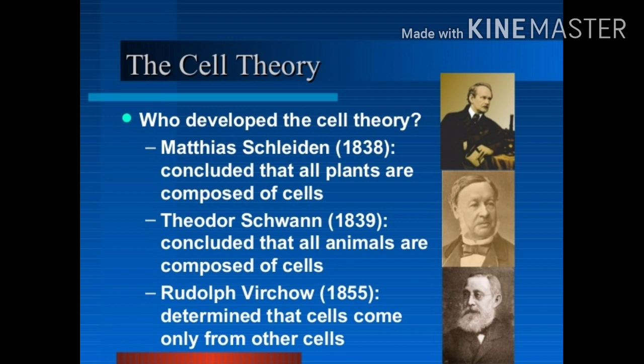Now let's look at cell theory. Who developed the cell theory? Basically, Schleiden in 1838 concluded that all plants are composed of cells. He was the first to tell us that all plants are composed of cells.